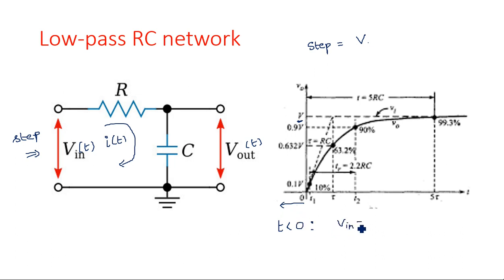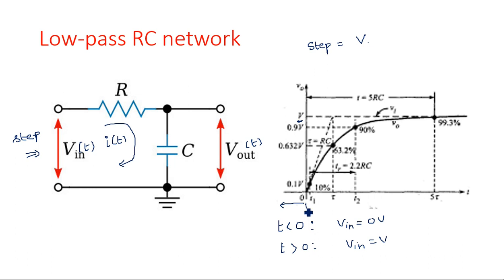For t greater than 0, V_input equals V volts. At t equal to 0, the input abruptly changes from 0 to V volts — there is a sudden change at exactly t = 0.